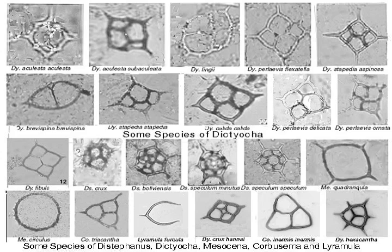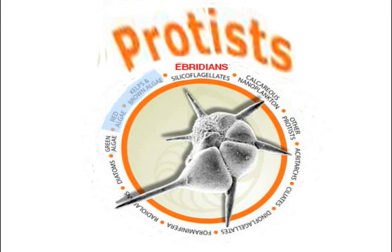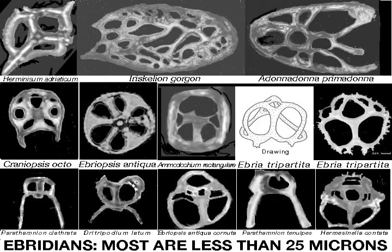The Ebriideans are set apart from other silicoflagellates because the living ones have a large nucleus and lack chromatophores; all differ from other silicoflagellates in that their skeletons are solid, not hollow bars. They occur only in Paleocene and younger strata. Where they are found in sufficient numbers, their form genera and species permit a zonation. Most are nanofossils, but pictured on the top row of the slide are some larger ones.